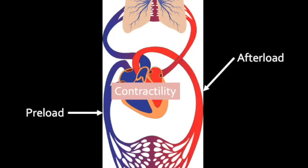The third component is afterload — the resistance the heart has to pump against, caused by the arterial vasculature. We have to optimize that as well. If the arterial vasculature is all clamped down because the sympathetic nervous system is working as a compensatory mechanism to a low cardiac output state, that will further decrease circulation to the tissue. Imagine all of those arteries getting clamped down — it's like turning a faucet down; we have less flow.